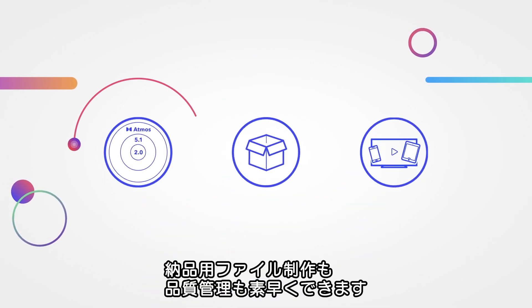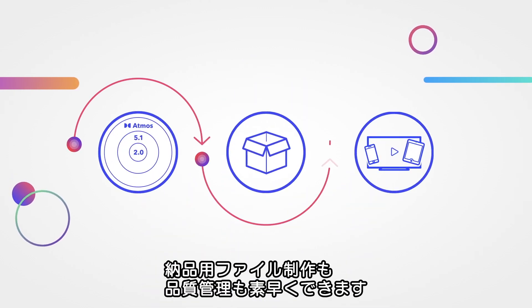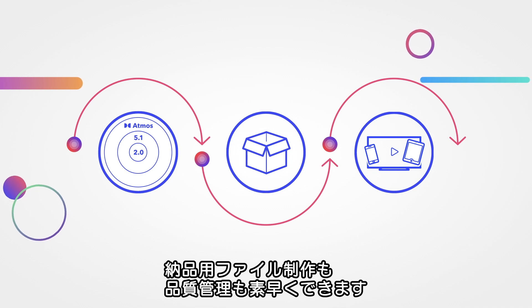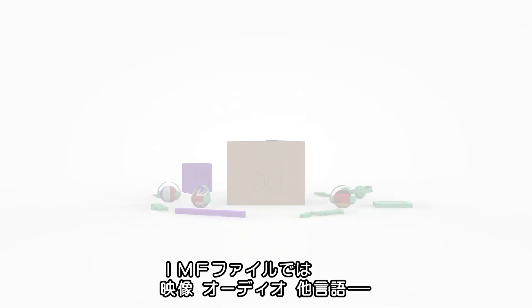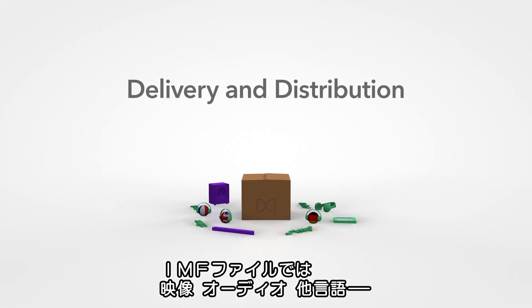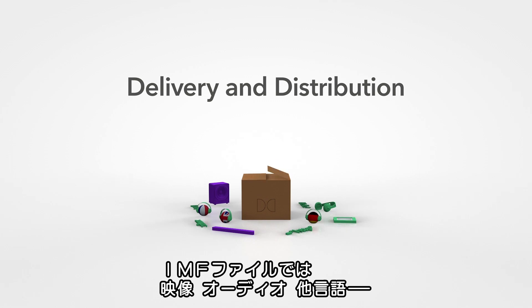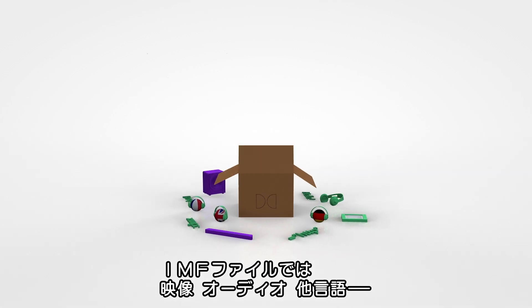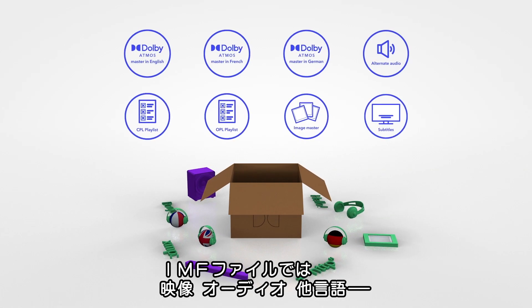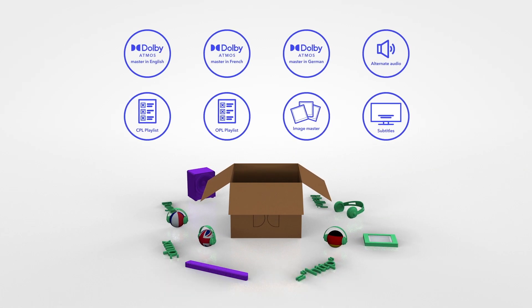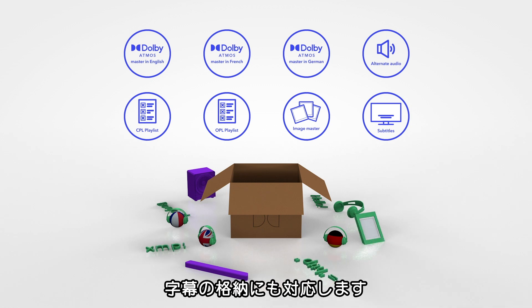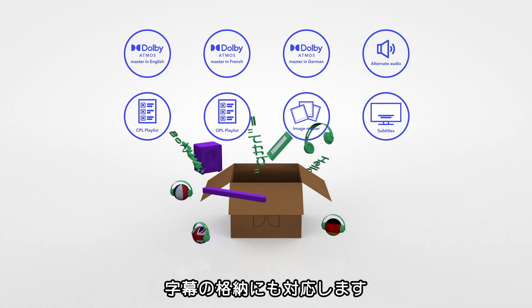With Dolby Atmos, QC and deliverables creation are quick and easy. And with IMF delivery, it is as simple as packing up a box containing all your image and audio masters, language versions and subtitles.